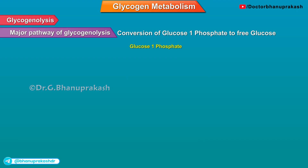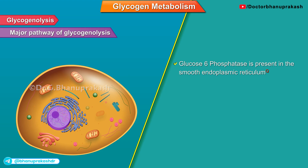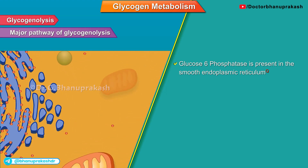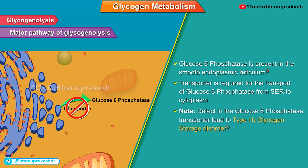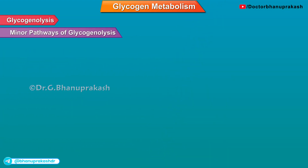Next is the conversion of glucose-1-phosphate to free glucose. Glucose-1-phosphate gets converted to glucose-6-phosphate by an enzyme called phosphoglucomutase. Glucose-6-phosphate finally forms glucose by glucose-6-phosphatase. Glucose-6-phosphatase is present in the smooth endoplasmic reticulum. A transporter is required for the transport of glucose-6-phosphate from the smooth endoplasmic reticulum to the cytoplasm. Defect in the glucose-6-phosphate transporter leads to type 1b glycogen storage disorder.